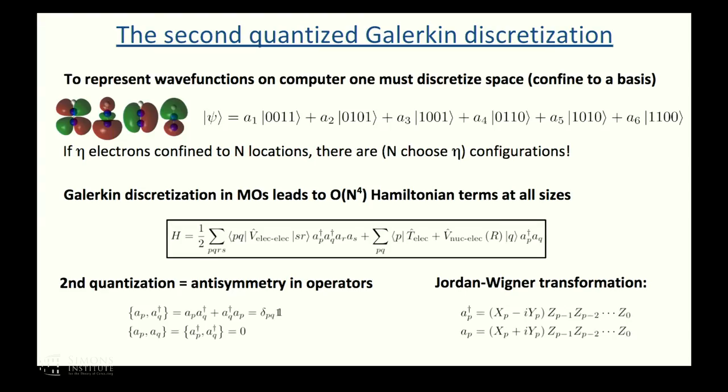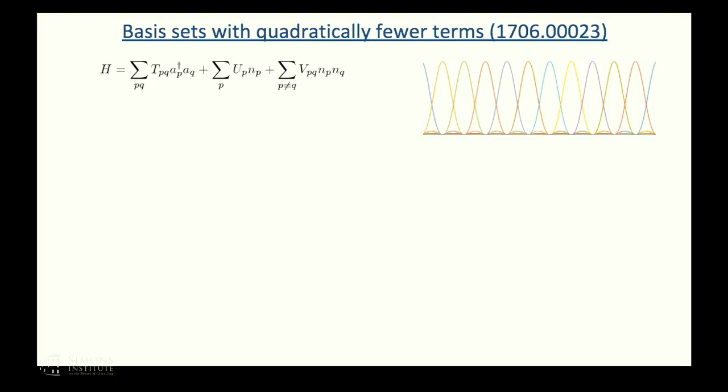So now we have a qubit Hamiltonian. But I want to point out that this Hamiltonian has a rather large number of terms from my perspective. It has n to the fourth terms in it, which is a large number for quantum simulation algorithms. I want to spend a moment talking about ways that you could represent this Hamiltonian using fewer terms. I'll devote this one slide to talking about this recent PRX paper we had, where we found basis sets that allowed us to write the Hamiltonian in a form that had only N squared terms and discuss some associated quantum algorithms.